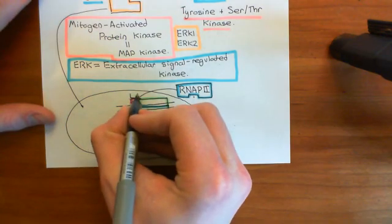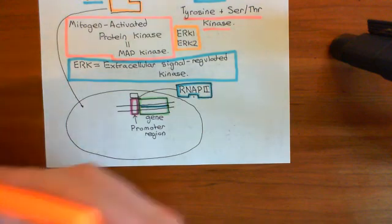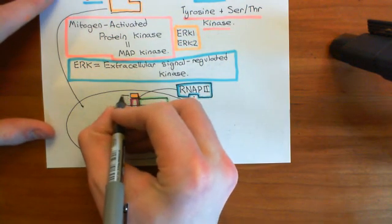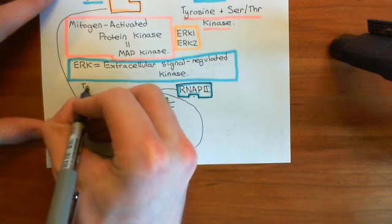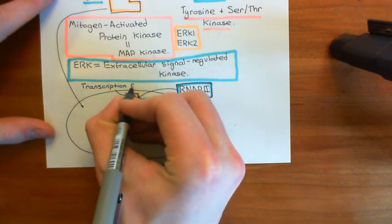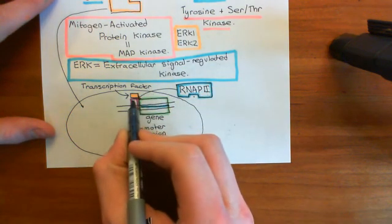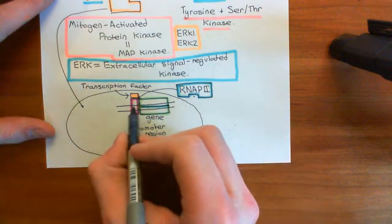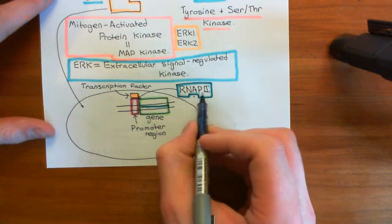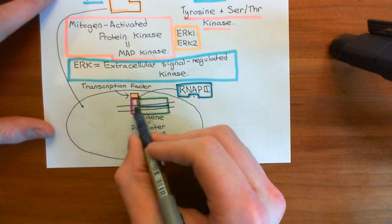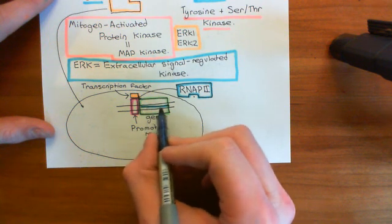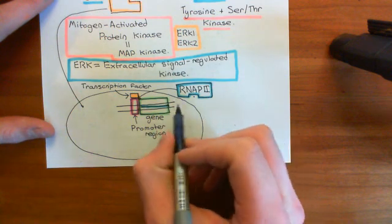A transcription factor is a molecule that can bind to the promoter regions of a huge number of different genes — generally hundreds of different genes. When it binds to a promoter region, it will change the affinity of that promoter region for RNA polymerase 2. At some promoter regions it will increase the affinity, resulting in RNA polymerase 2 binding more often and synthesizing complementary mRNA more often, producing more protein.